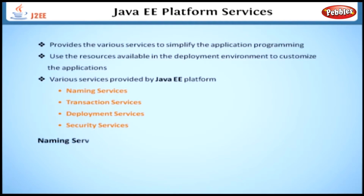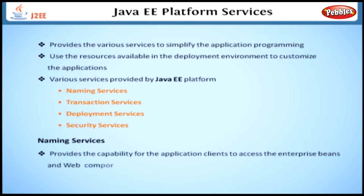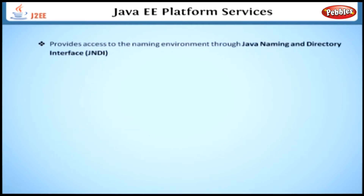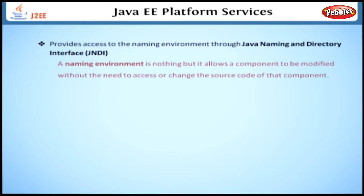Let's start with naming services. Java EE naming services provide the capability for application clients to access enterprise beans and web components. It also provides access to the naming environment through Java Naming and Directory Interface. A naming environment allows a component to be modified without the need to access or change the source code of that component.